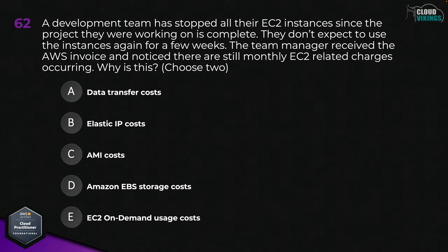Question sixty-three: horizontally scaled web hosts need access to the same shared files. Which AWS service could help with this? Options are: A, Amazon Redshift; B, AWS Snowcone; C, Amazon CloudFront; D, Amazon RDS; or E, Amazon EFS. The correct answer here would be E, Amazon EFS.